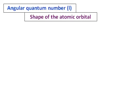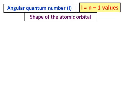Now we have entered the building — let's go into the first floor. Once you go into the first floor, you need to know what the shape of the rooms is and how many rooms are there. The shape of the atomic orbital when n = 1 is given by the second quantum number, which we call the angular quantum number. The number of values l can take — l being the symbol for the angular quantum number — is n minus 1 values.